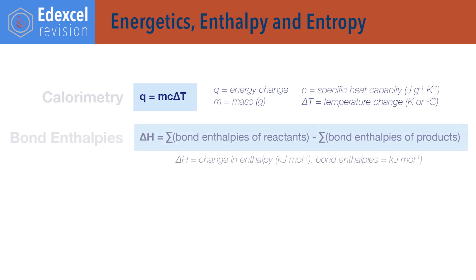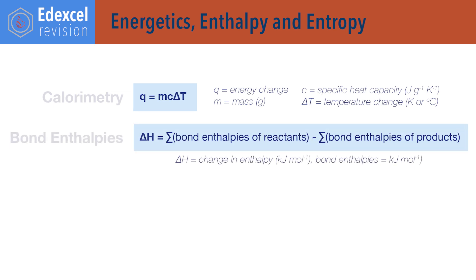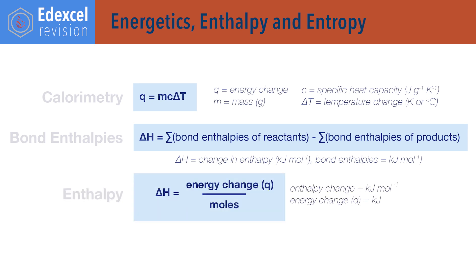Delta H, change in enthalpy, equals the sum of bond enthalpies of reactants minus the sum of bond enthalpies of products — sum of means added altogether. Delta H enthalpy change equals energy change Q divided by moles.